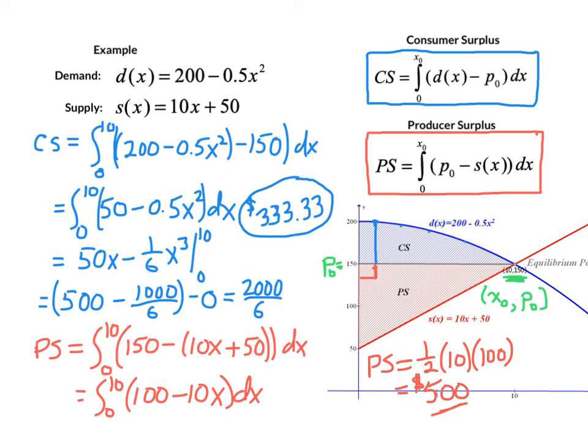Again, if only one unit was out there that was needed in the market, there would be somebody according to our supply function that would be willing to produce it for $60. But when they put their item into the market, they see that they're getting $150 because that's what the market demand is. And so they are feeling this benefit of $90 more than they would have been willing to take for producing the item. So if you get into your econ class and need to discuss what do these mean, that's what they mean.